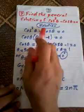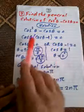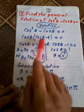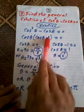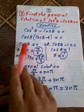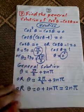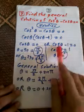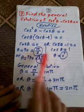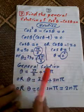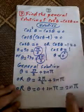Another example: find the general solution of cosine squared theta minus cosine theta equals 0. Take cosine theta as a common factor: cosine theta times (cosine theta minus 1) equals 0. So either cosine theta equals 0, giving theta equals 90° or 270°, or cosine theta equals 1, giving theta equals 0. The general solution is θ = π/2 + 2nπ, θ = 3π/2 + 2nπ, or θ = 2nπ.